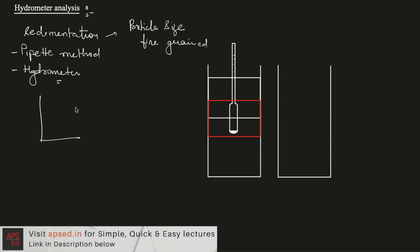In sedimentation analysis, if we have fine-grained soils in suspension, initially we shake the container so that the concentration of particles is uniform. As time passes, these particles will settle and their settling velocity depends on the particle size — it is proportional to the square of the diameter of the particle. So particles of larger size will settle quicker than particles of smaller size.